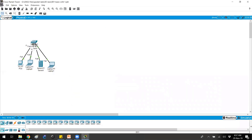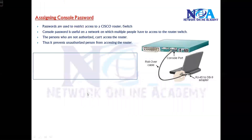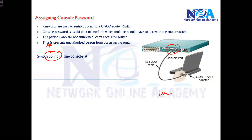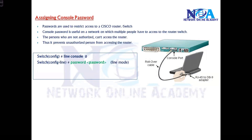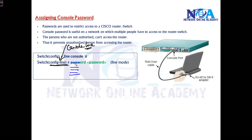To assign the password, we need to go to the console line using the command 'line console 0'. Make sure you are inside global configuration mode. There are multiple lines on the device, so we specify the console line. By default there is one console port, so you use console port zero. Once you enter this command, the mode changes to config-line, indicating you are inside the line mode for the console line.